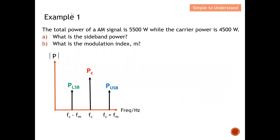Let's go to Example 1. The total power of an amplitude modulation signal is 5500 watts, while the carrier power is 4500 watts. What is the sideband power? The total power of 5500 watts consists of the addition of three components: the lower sideband, the carrier, and the upper sideband.